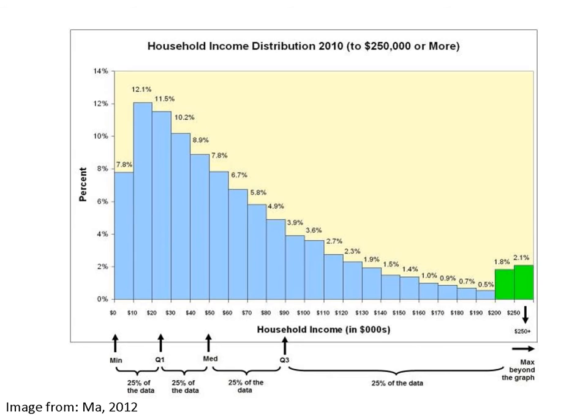The interquartile range uses the range of values represented by the middle 50% of observations. First, you break up the data range into four quarters. The interval from the first quartile to the third quartile contains the middle 50% of the data. The interquartile range is defined as the length of this interval. In this example, the third quartile value is $90,000 and the first quartile value is $25,000, so the interquartile range is $65,000.